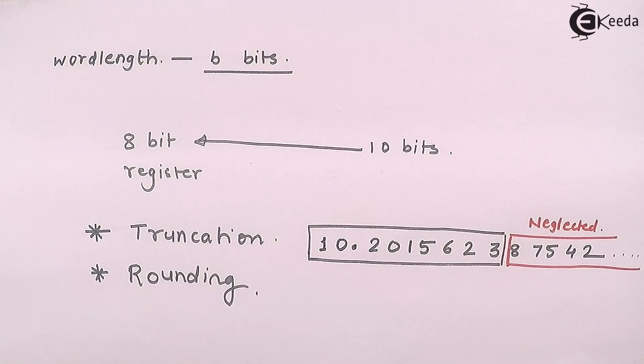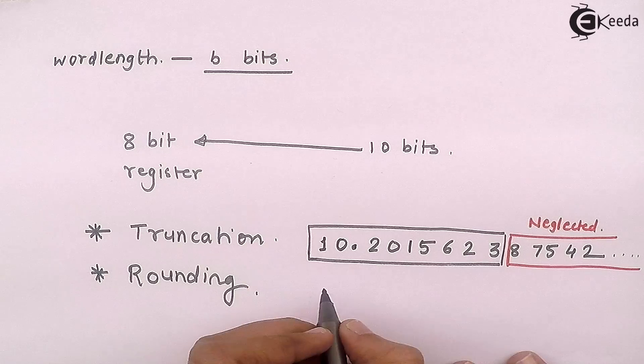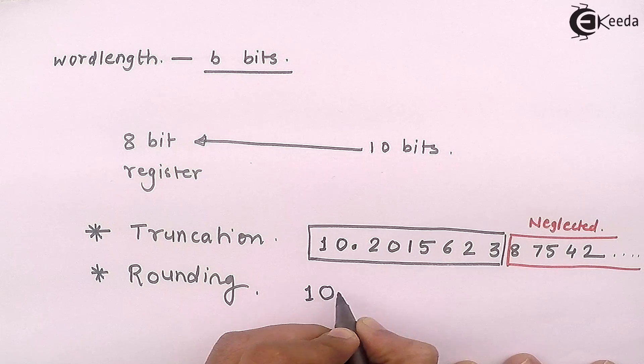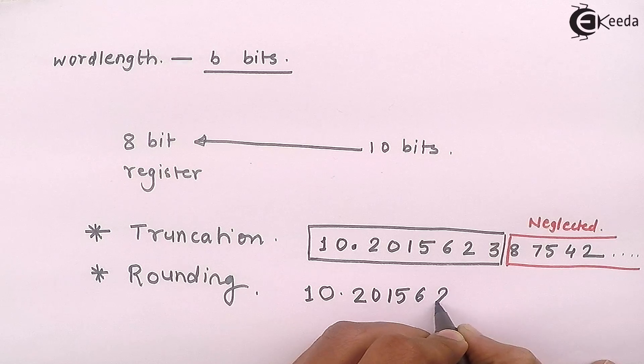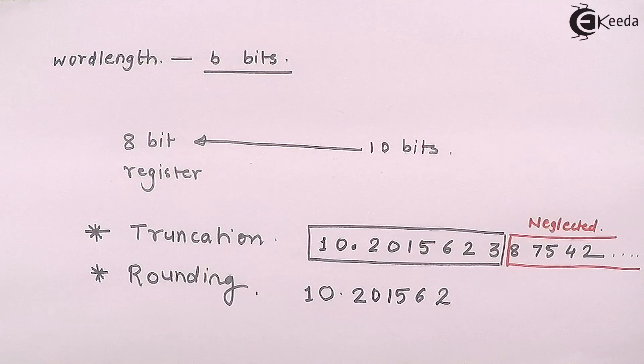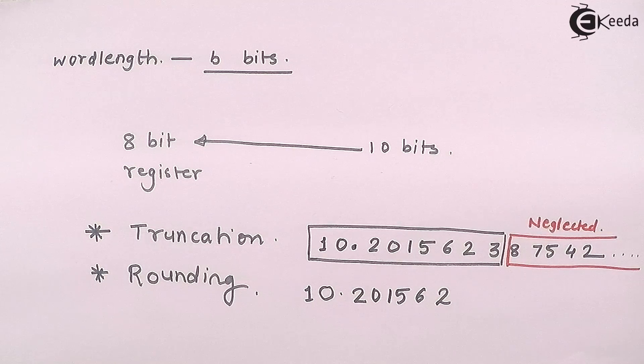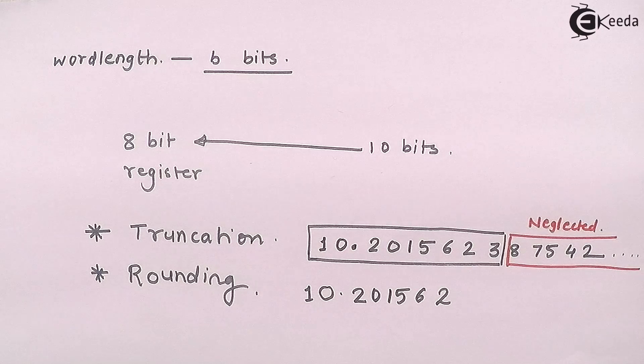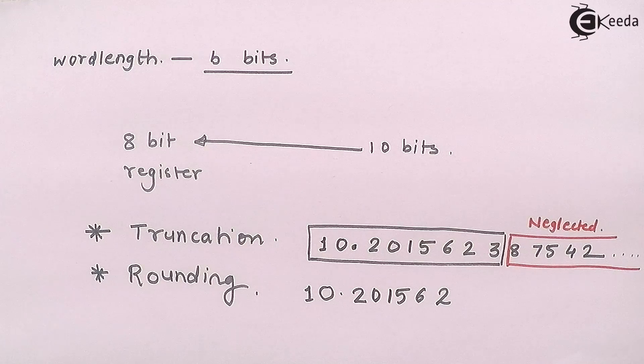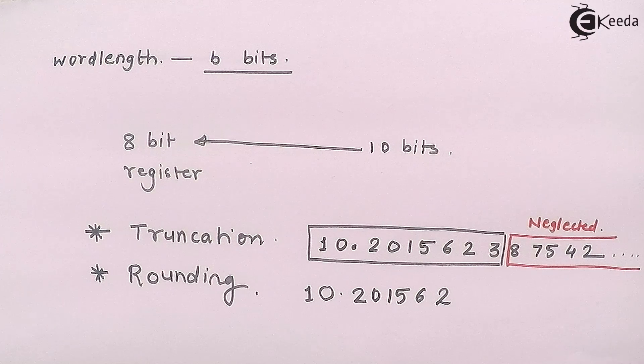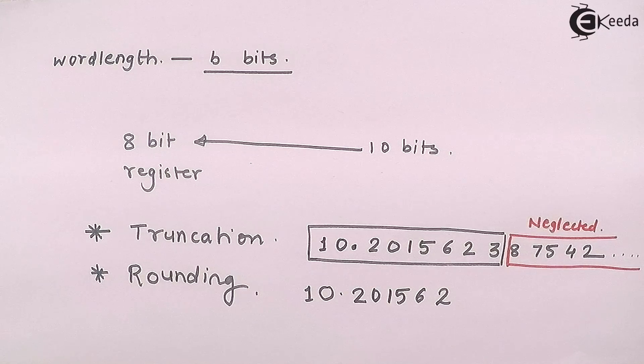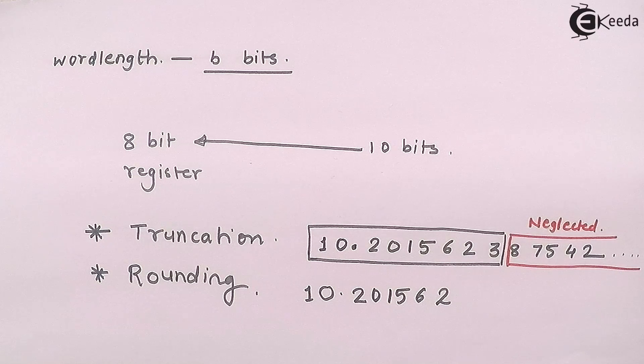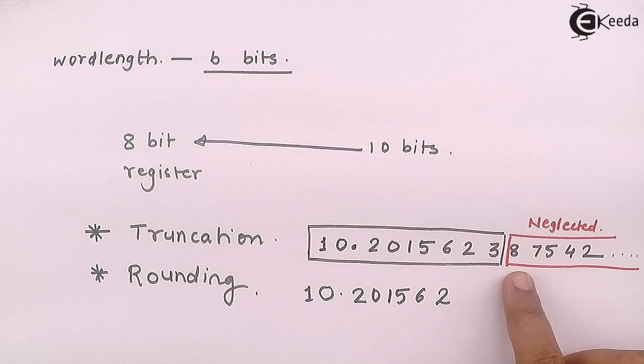Whereas in rounding, the same number will be written as 10.201562. Now there are two ways of rounding. Either I will keep it 3 as it is. If I keep 3 as it is then it will not be rounding but it will be truncating.